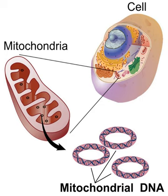The promoters for the initiation of the transcription of the heavy and light strands are located in the main non-coding region of the mtDNA called the displacement loop, the D-loop. There is evidence that the transcription of the mitochondrial rRNAs is regulated by the heavy strand promoter 1, and the transcription of the polycistronic transcripts coding for the protein subunits are regulated by HSP2. Measurement of the levels of the mtDNA-encoded RNAs in bovine tissues has shown that there are major differences in the expression of the mitochondrial RNAs relative to total tissue RNA.